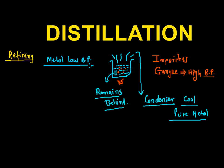This is all about the distillation method. It is used in cases where impurities are having a higher boiling point and the metal has a low boiling point. The examples of this method are mercury, zinc, and cadmium — these metals have a lower boiling point compared to the impurities present in them.